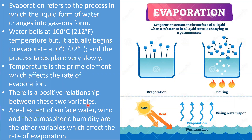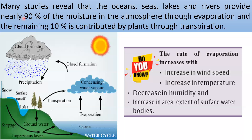Aerial extent of surface water, wind, and atmospheric humidity are the other variables that affect the rate of evaporation. When the temperature is high, the rate of evaporation will also be high. Many studies reveal that oceans, seas, lakes, and rivers provide nearly 90 percent of the moisture in the atmosphere through evaporation, and the remaining 10 percent is contributed by plants through transpiration.